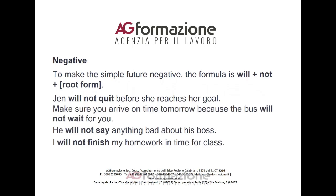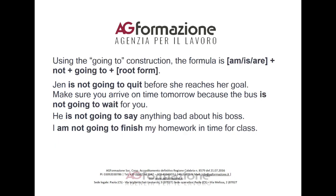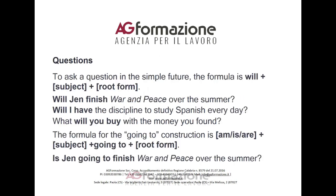Negative: To make the simple future negative, the formula is 'will' plus 'not' plus root form. Examples: Jen will not quit before she reaches her goal. The bus will not wait for you. He will not say anything bad about his boss. I will not finish my homework in time for class. Using the 'going to' construction, the formula is am/is/are plus 'not' plus 'going to' plus root form. For example: Jen is not going to quit before she reaches her goal. The bus is not going to wait for you.